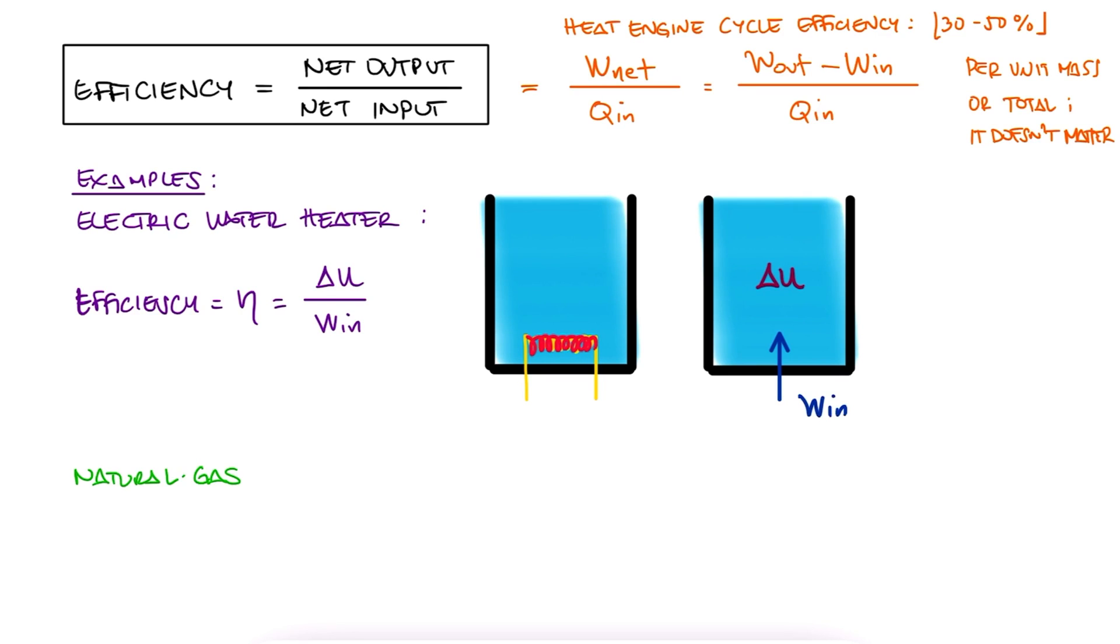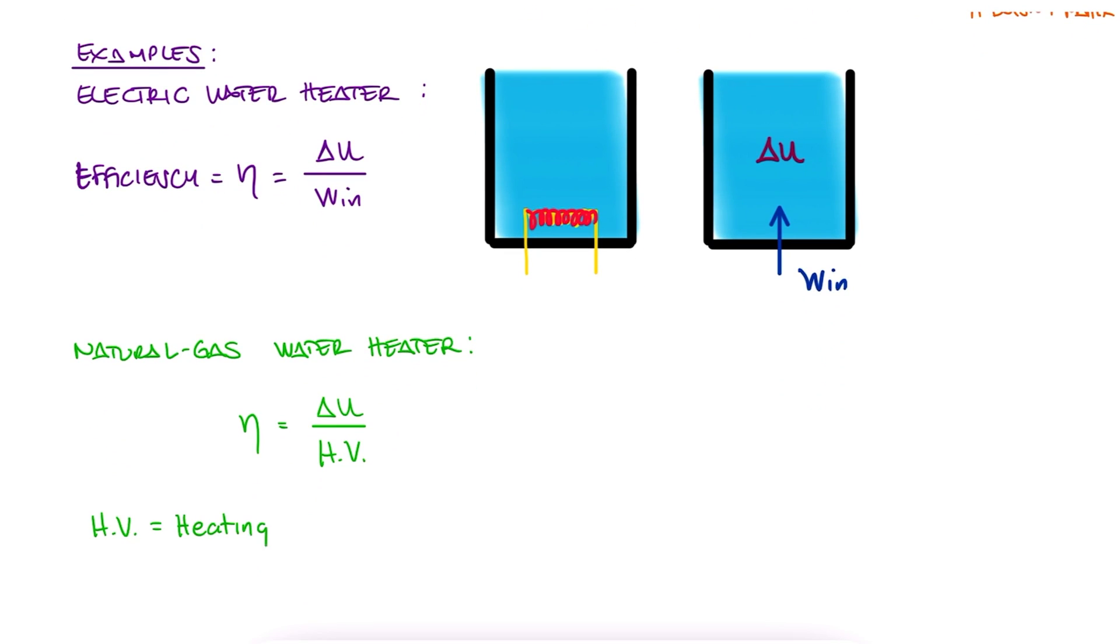For a natural gas-based water heater, it would be the same internal energy change over, in this case, the heating potential of the gas. This comes down to the stoichiometric ideal energy that comes from burning a substance, usually calculated as the heating value times the mass, but more on that in just a second.